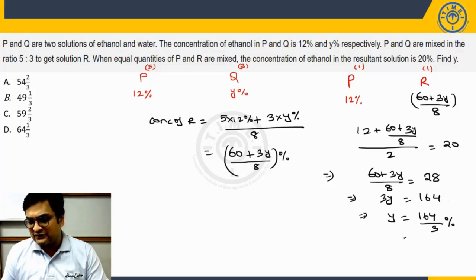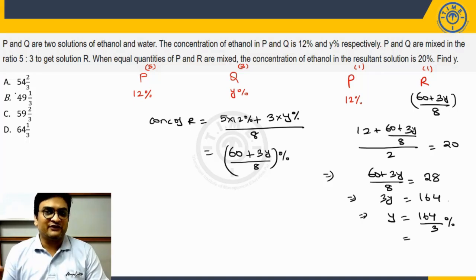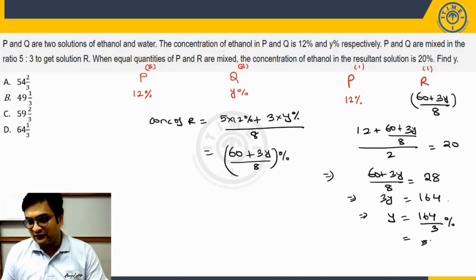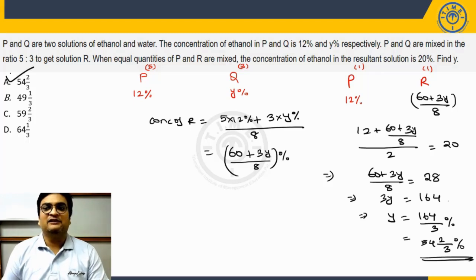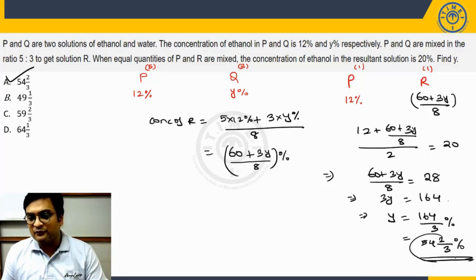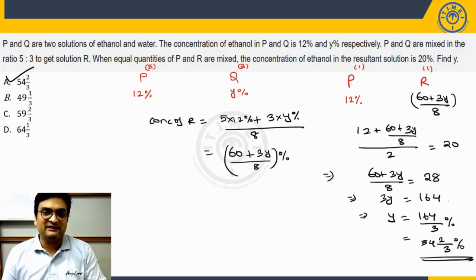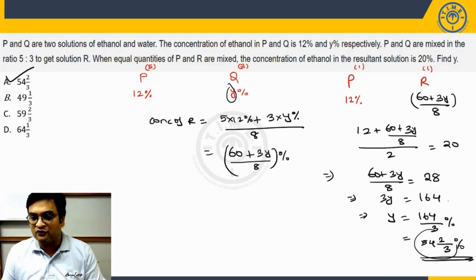Of course, it will be in percentage. What is 164 by 3? Because the option choices are in mixed fraction. Let us convert that. When you simplify this, this will be 54 2 by 3 percentage. 54 2 by 3 percentage would mean the option choice A. The value of y will be 54 2 by 3. It is not percentage because already we are taking the concentration of ethanol in solution Q as y percentage, so the value of y will be only 54 2 by 3.